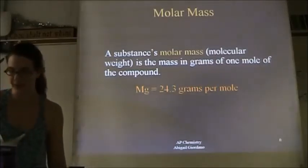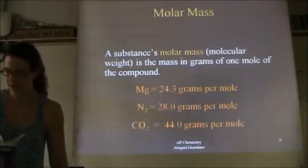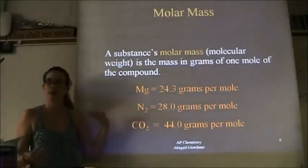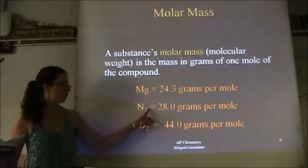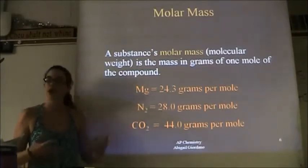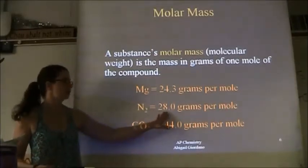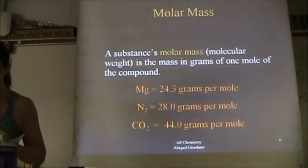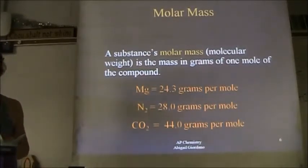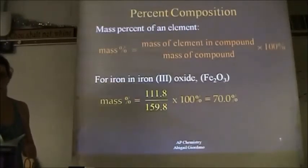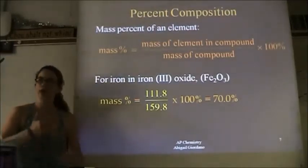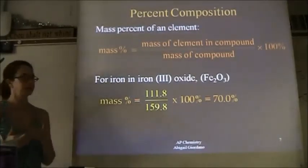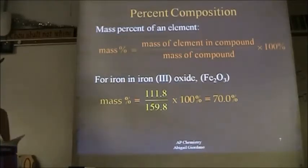You may round to one decimal place. Remember: molar mass — you've got to take the subscripts into account. Nitrogen has a molar mass of 14; two of them is 28. Now let's get into some calculations: percent composition, or more likely called percent by mass.